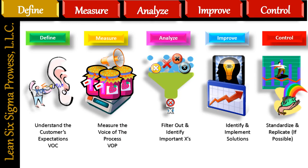The DMAIC 5-step process can be broken down into a simple statement: Define and understand the customer's expectations — the Voice of the Customer (VOC); Measure the Voice of the Process (VOP); Analyze — filter out and identify the important Xs (inputs); Improve — identify and implement solutions at the Gemba; Control — standardize and replicate the improvements on another line or lines.